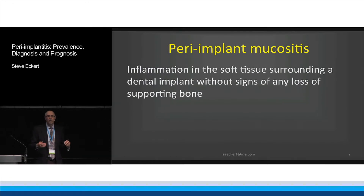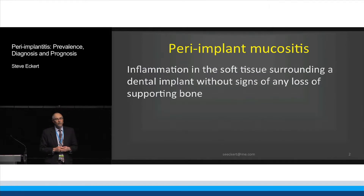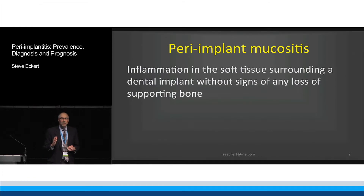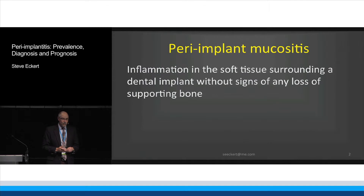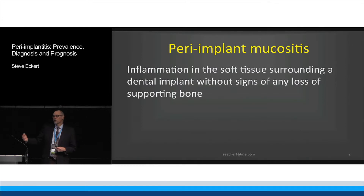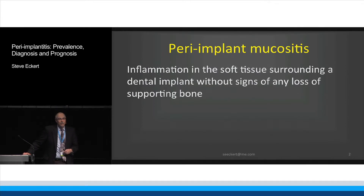When we think about peri-implantitis, we probably also think about the analogous term, or the first cousin, which would be peri-implant mucositis — inflammation of the soft tissue that surrounds an implant without any changes in the bony support to the implant. So it's sort of like gingivitis, except around a dental implant. Except there's no gingiva around a dental implant; there's mucosa.